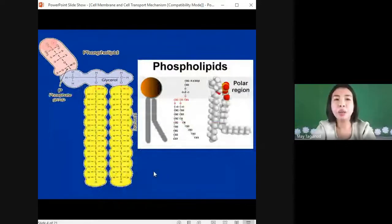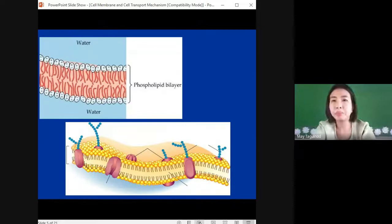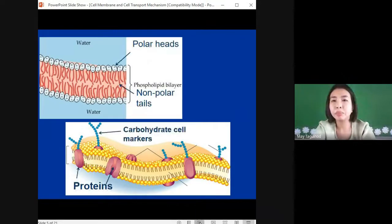Phosphate group plus glycerol together is phospholipid. Here's a fluid mosaic model of the cell membrane. As you can see there's a protein embedded in it. There's also a small amount of fats attached in our cell membrane. Non-polar tails are on the inside because they don't want water, while the polar heads are on the outside where water is.